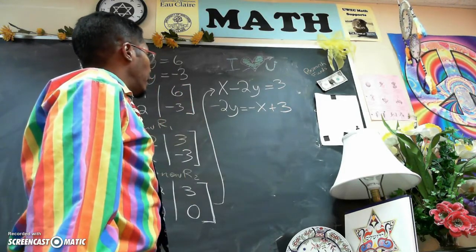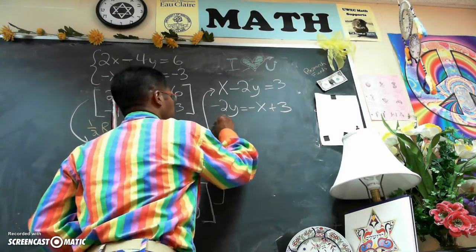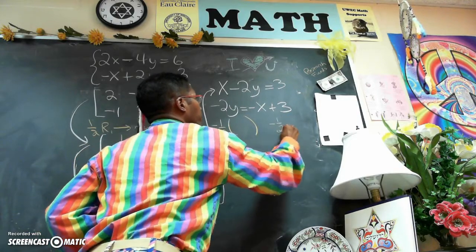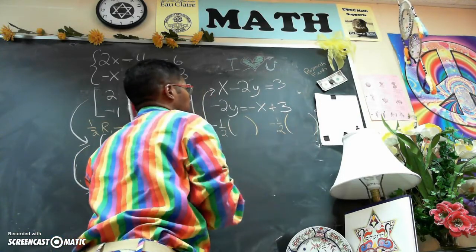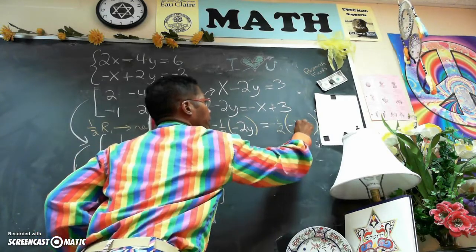And then I can multiply by negative 1 half on both sides. So negative 1 half times 2y and negative 1 half times negative x plus 3. So I have negative 2y here. I have negative x plus 3.